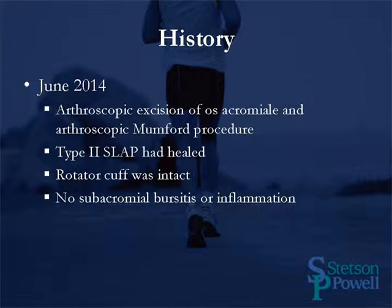After failing conservative management, he was taken to surgery in June of 2014, where we performed an arthroscopic excision of the os acromiale and also the arthroscopic Mumford procedure. At the time of surgery, the type 2 SLAP lesion had healed, the rotator cuff was intact, and there was no subacromial bursitis or inflammation. We'll now go through the details of that procedure.